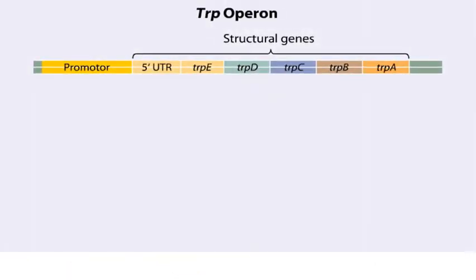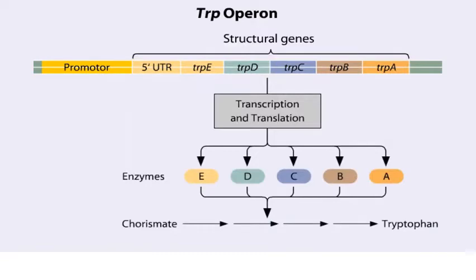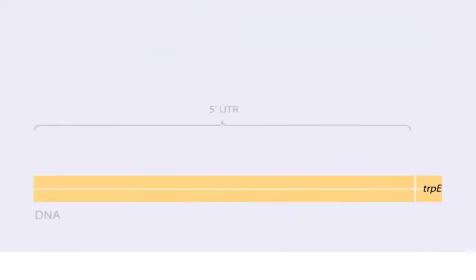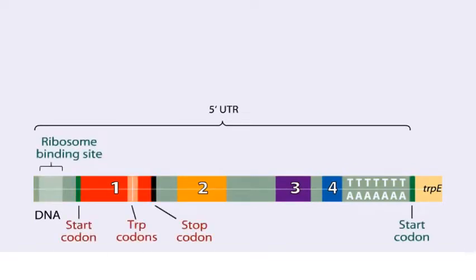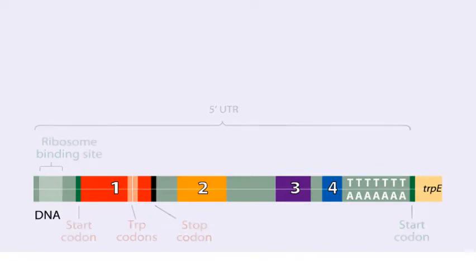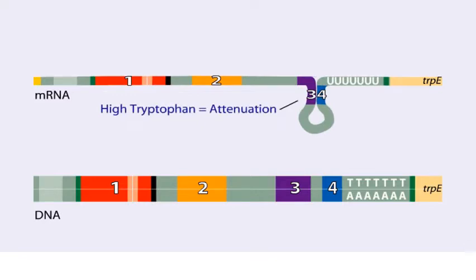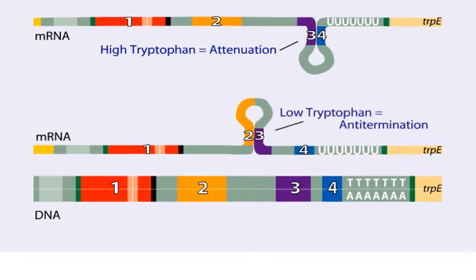The trp operon in E. coli contains five structural genes corresponding to enzymes that convert chorismate into tryptophan. The trpE gene contains a five-prime untranslated region, or UTR, that plays an important role in the regulatory mechanism called attenuation. The five-prime UTR contains four regions. Region one encodes a short peptide containing tryptophan amino acids. When tryptophan levels are high, region three pairs with region four — this structure terminates or attenuates transcription. When tryptophan levels are low, region two pairs with region three — this structure does not terminate transcription.